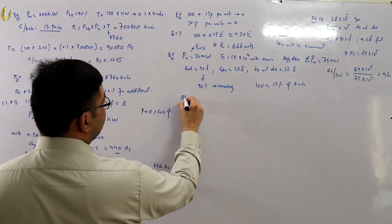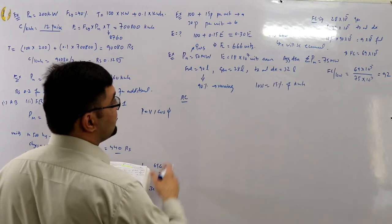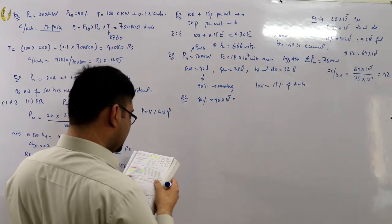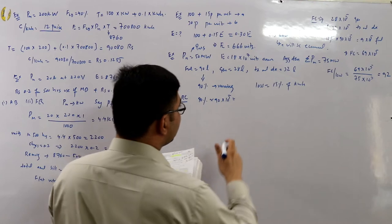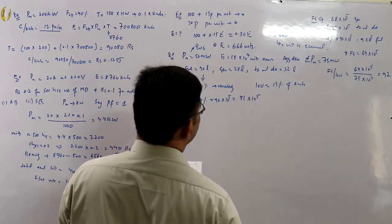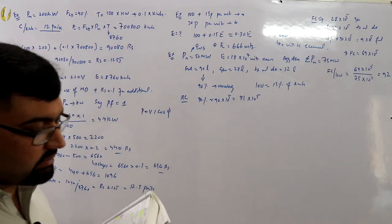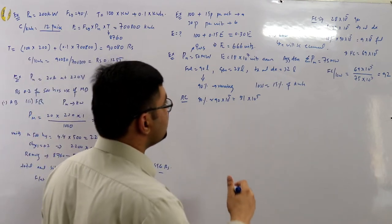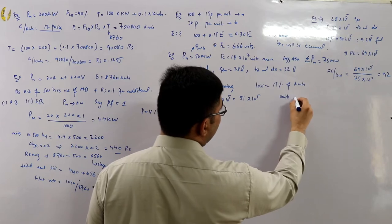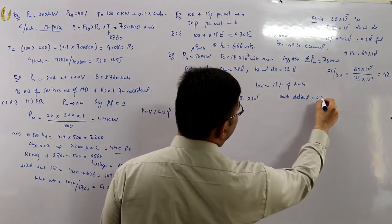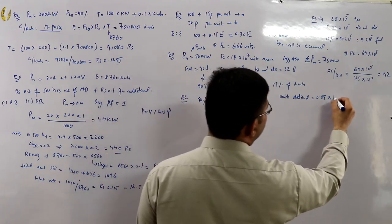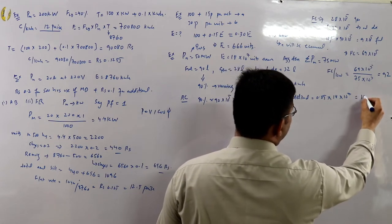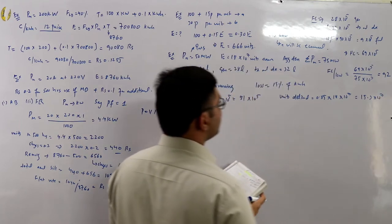Running charges: 90 percent of fuel = 81 × 10⁵ rupees. Units delivered are 85 percent of units generated: 0.85 × 18 × 10⁷ = 15.3 × 10⁷ units. These are the units actually delivered to consumers.